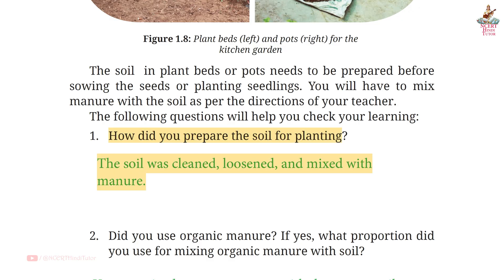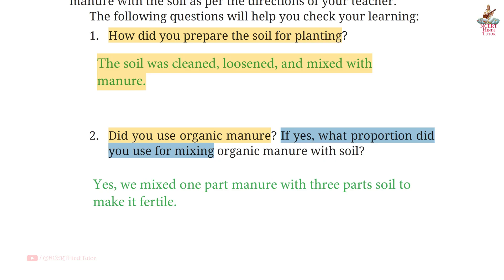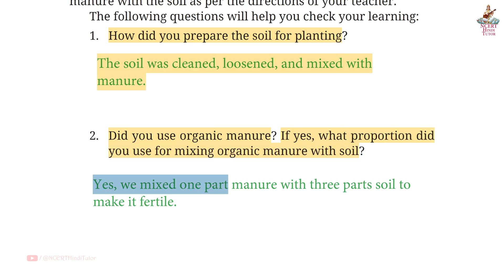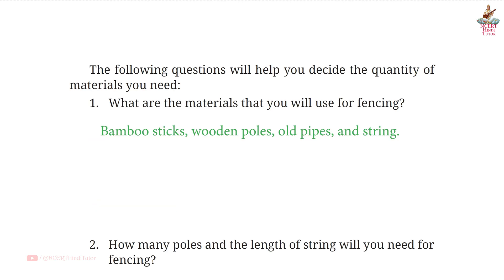Page 17, Question 1: How did you prepare the soil for planting? Answer: The soil was cleaned, loosened, and mixed with manure. Question 2: Did you use organic manure? If yes, what proportion? Answer: Yes, we mixed one part manure with three parts soil to make it fertile.